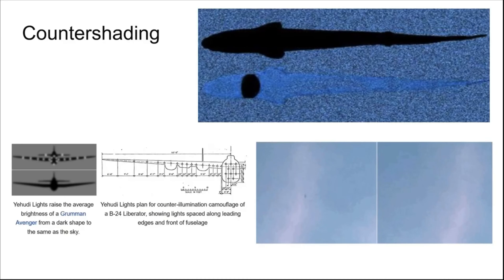The Grumman Avenger is a warplane that includes Yehudi lights. These lights increase the brightness of the shadow, so it's difficult to see this plane as it approaches in daylight. On the bottom right is an example of a military drone that includes light as a countershading mechanism in daylight. On the left panel you can see the drone clearly as a black spot. On the right it disappears, using light to get rid of its shadow.